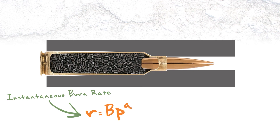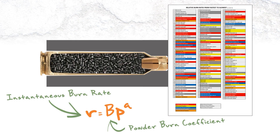B is what's called the powder burn coefficient. This is roughly analogous to those powder burn rate charts that are all over the internet — slow powders, fast powders, etc. Slower powders will be a lower number, faster burning powders will be a higher number, and this will change as the powder burns. At any given point in time, it's roughly analogous to what you see on those burn rate charts.